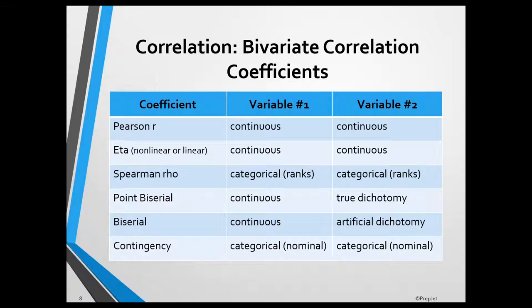An alternative to the Pearson R is eta, which can be used when both variables are continuous and the relationship is either linear or non-linear. For example, according to the Yerkes-Dodson Law, the relationship between arousal and performance takes the shape of an inverted U, with low and high levels of arousal being associated with lower levels of performance and moderate levels of arousal being associated with higher levels of performance. Assuming that arousal and performance are both measured on a continuous scale, eta would be the appropriate correlation coefficient for these measures.